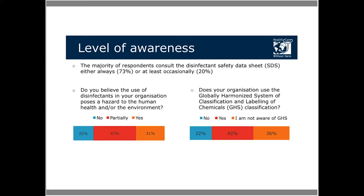We thought that part of the challenges related to the lack of information could be overcome with the implementation of an adequate regulatory framework — for example, the Globally Harmonized System (GHS) of classification and labeling of chemicals, which defines and classifies the hazards of chemical products and communicates them through safety data sheets. Nevertheless, the GHS is not widely used among the organizations that took part in the survey: on average, only 42% of respondents use this system, while more than a third are not even aware of it.